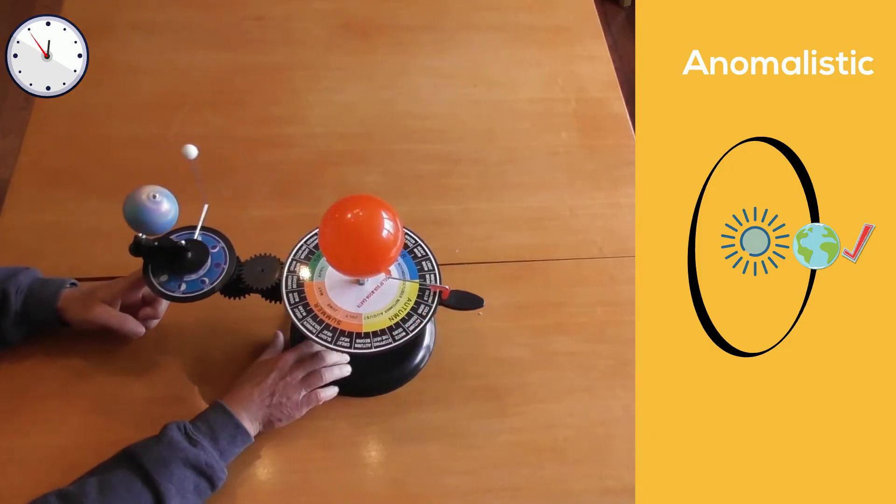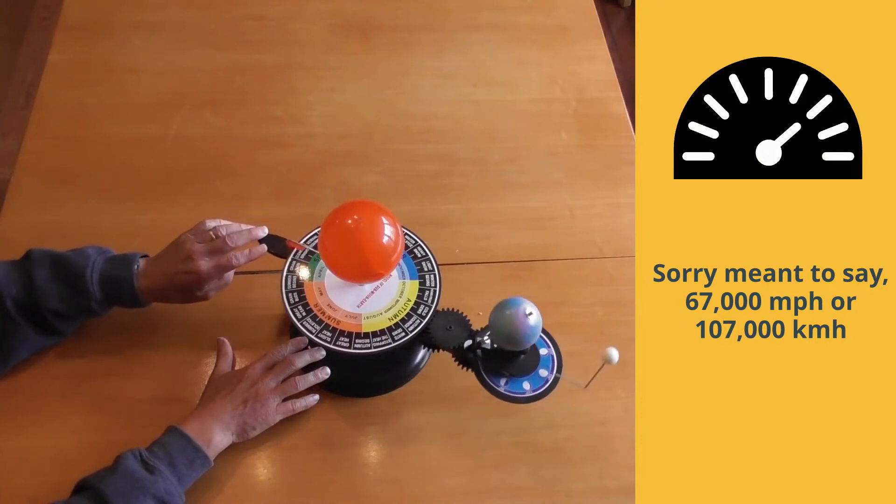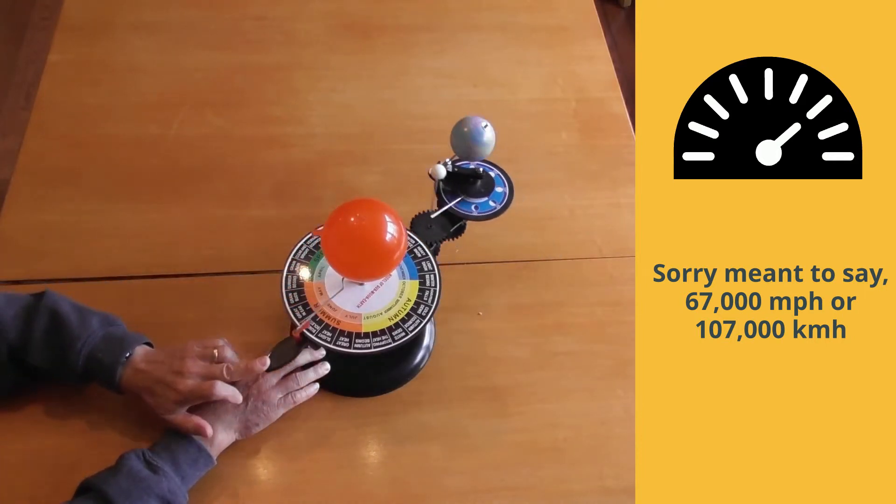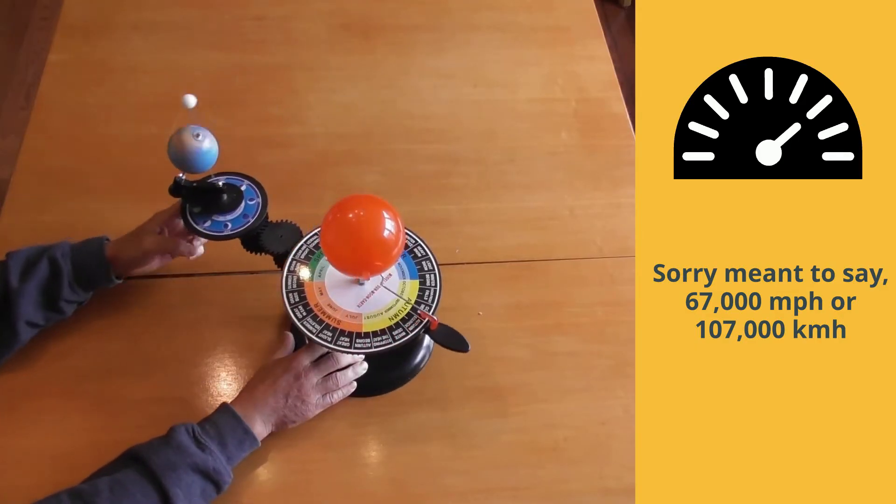As the Earth is traveling around the Sun, it travels at an amazing speed of about 67,000 miles per hour, which would be roughly 107,000 kilometers per hour.